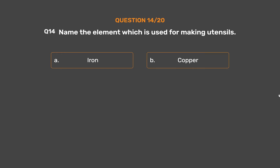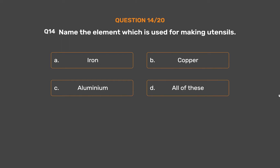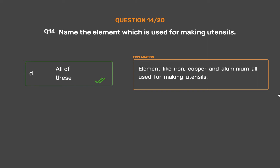Question number 14. Name the element which is used for making utensils. Option A: Iron. Option B: Copper. Option C: Aluminium. Option D: All of these. The correct answer is Option D: All of these. Elements like iron, copper, and aluminium are all used for making utensils.